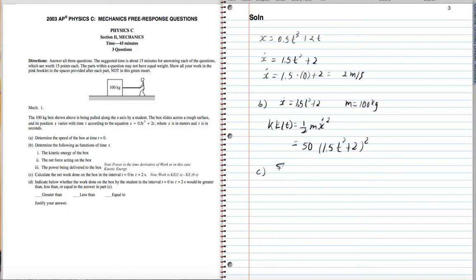And then for c, the net force. Well, we know that the sum of the forces is the mass times acceleration. When we add up all the forces, we get the net force, and that's completely equivalent to m times a. So rather than trying to figure out any kind of force on the box, let's get the acceleration by taking a derivative and multiply it by the mass. So we have that the velocity, or the speed, is 1.5 t squared plus 2. So the acceleration, which is the derivative, is going to be 3.0 t.